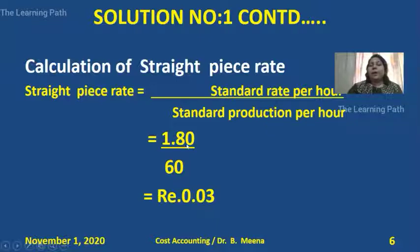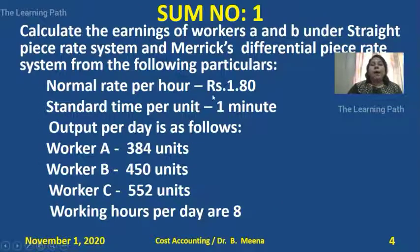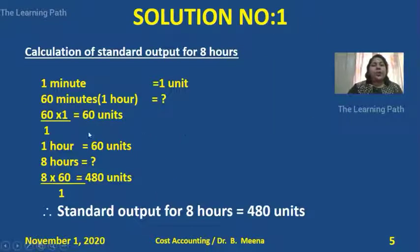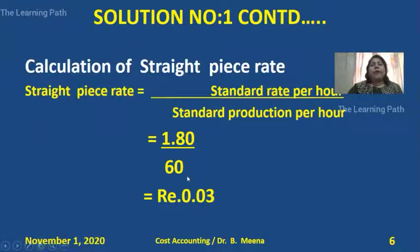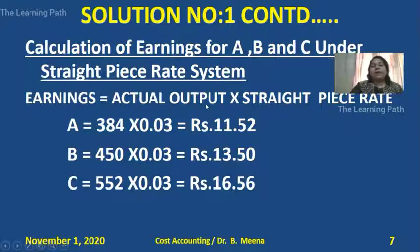Since piece rate is not given, we use the formula: standard rate per hour divided by standard production per hour. The rate per hour given in the problem is 1.8, and the standard production per hour is 60 units (from our working notes). So piece rate = 1.8 divided by 60 = 0.03. We have found the straight piece rate as 0.03.